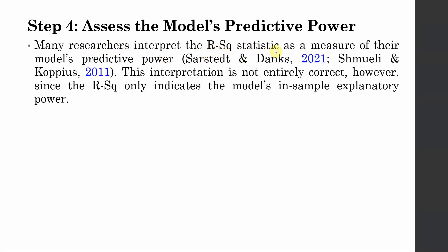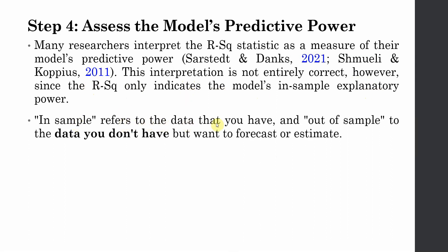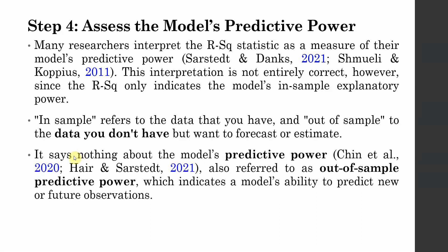Many researchers interpret the R-square statistic as a measure of their model's Predictive Power. This interpretation is not entirely correct, since R-square only indicates the model's In-Sample Explanatory Power. In-sample refers to the data that you have, and out-of-sample to the data you do not have but want to forecast. R-square says nothing about out-of-sample predictive power, which indicates a model's ability to predict new or future observations.